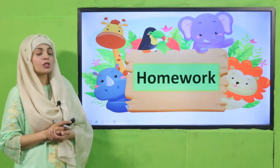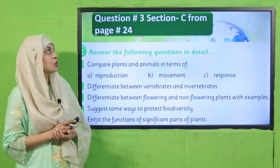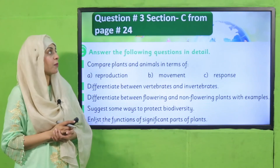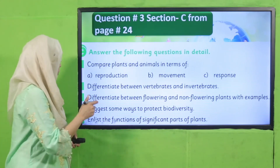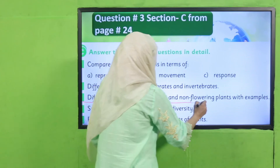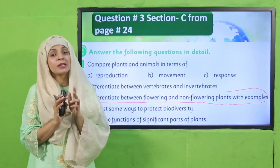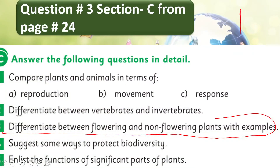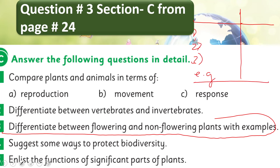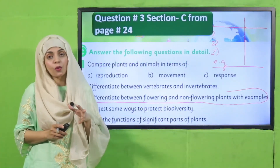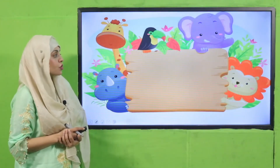Now is the time for homework. You will do question number three from section C on page number 24: differentiate between flowering and non-flowering plants with examples. You will draw a column — on one side write 'flowering' and on the other side write 'non-flowering.' Write the four differences and then give examples of each. This is how you will complete this question in your notebooks.